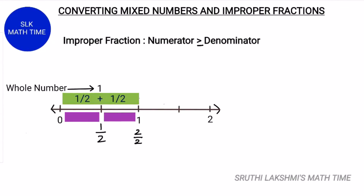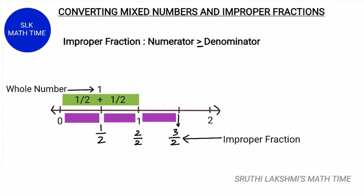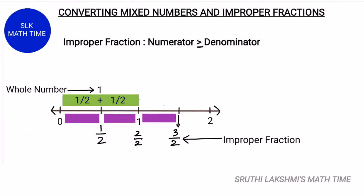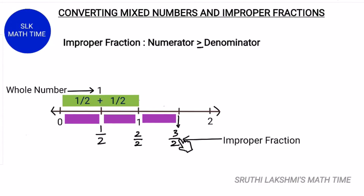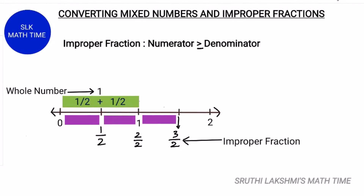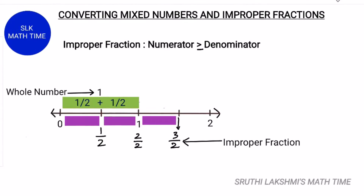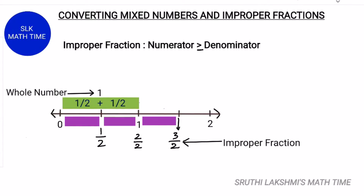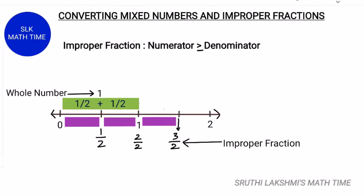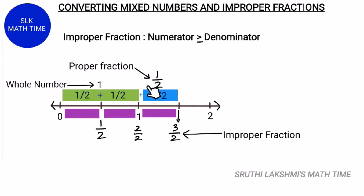Let's add another half. Now we have 3 by 2. 3 by 2 is an improper fraction because the numerator is greater than the denominator. That means its value is greater than 1. On the number line, we have gone past 1 half, which is a proper fraction.